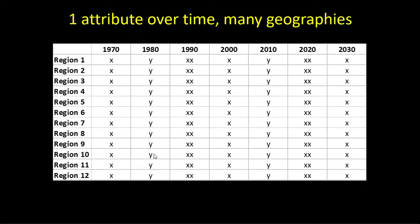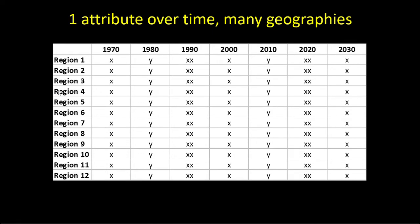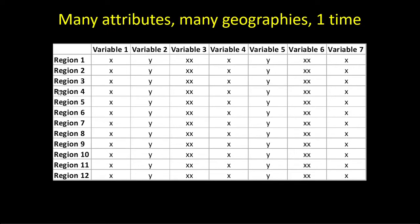Take one attribute over time — say, population. We store this in a table with different geographies such as counties or states in rows, and time periods as columns. That's one type of attribute table. Another type has many attributes — infant mortality, population growth rate, death rate, birth rate — for many geographies at one snapshot in time. The geographic component is the many geographies.